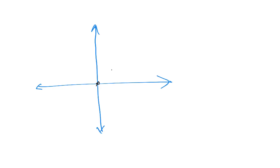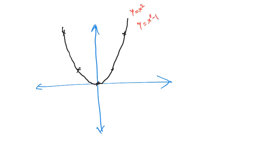For x squared: x equals 0, y equals 0; x equals 1, y equals 1; x equals 2, y equals 4; x equals 3, y equals 9. We have to add a parabola here for y equal to x squared.